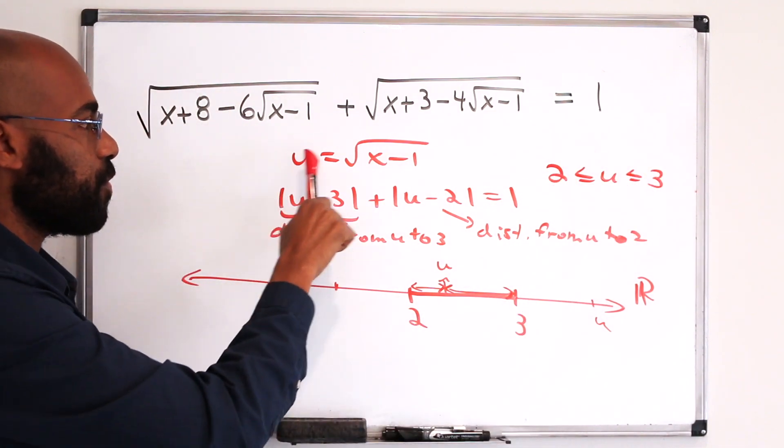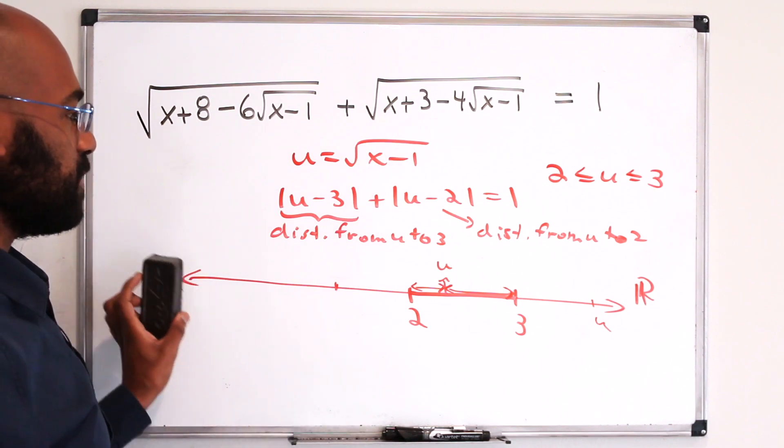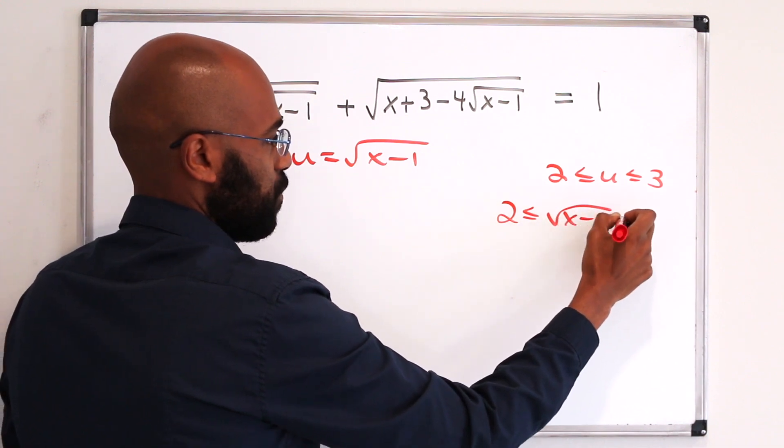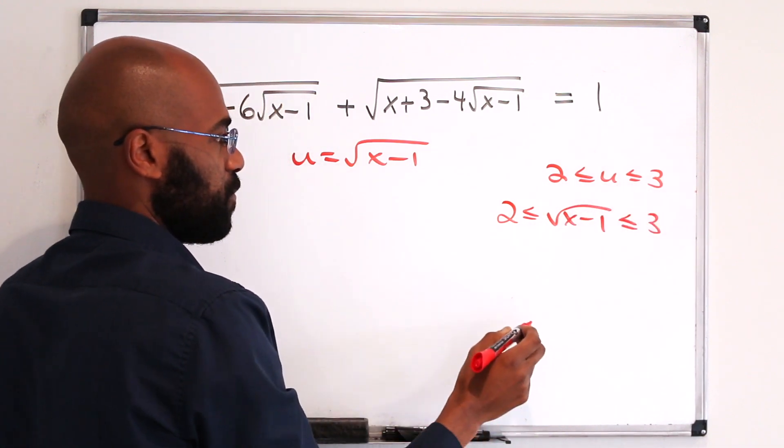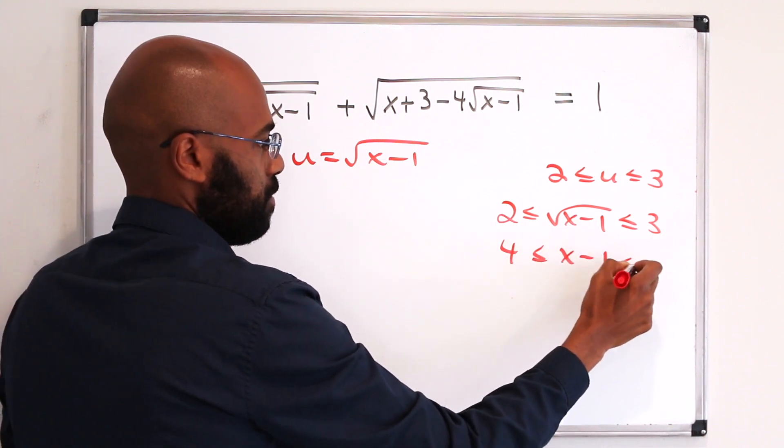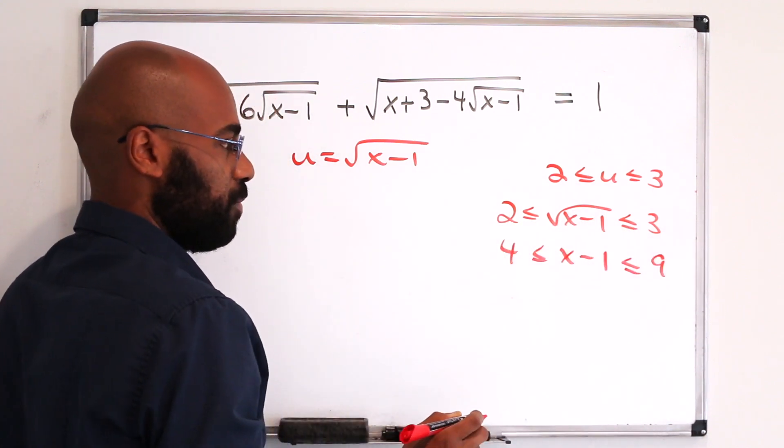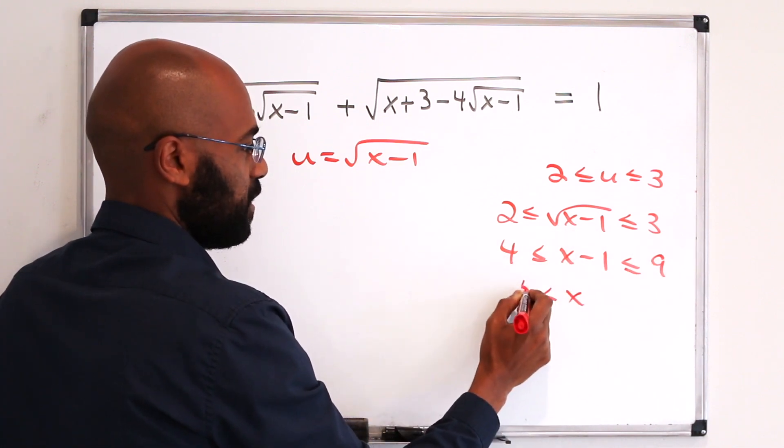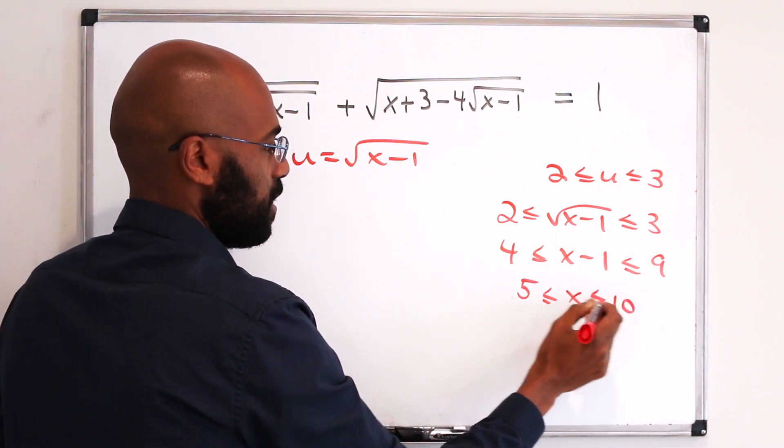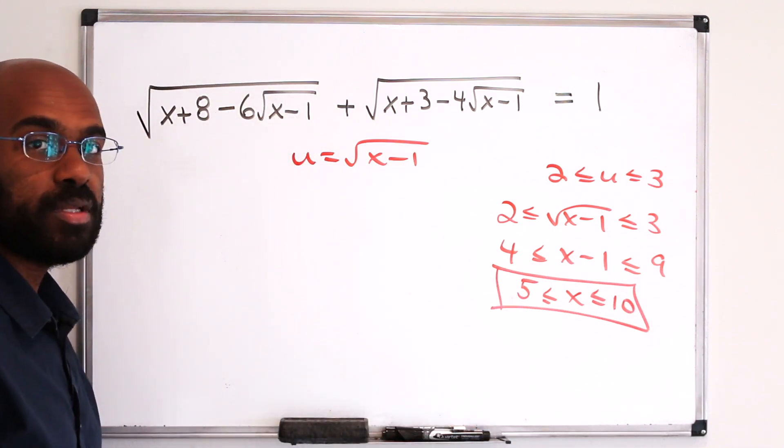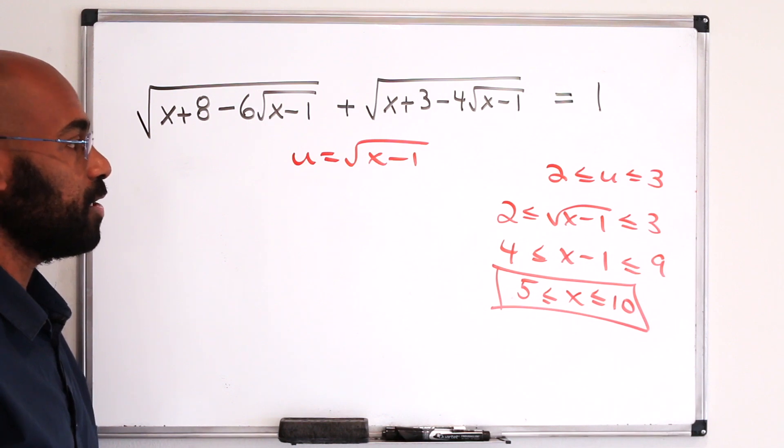And so now we can figure out all the values of x that satisfy this. 2 has to be less than or equal to the square root of x minus 1, which is less than or equal to 3. And so if we square, we get 4 bounds x minus 1 from below, and 9 bounds it from above. And so the entire set of values of x that satisfy our original equation is all real numbers between 5 and 10 inclusive.